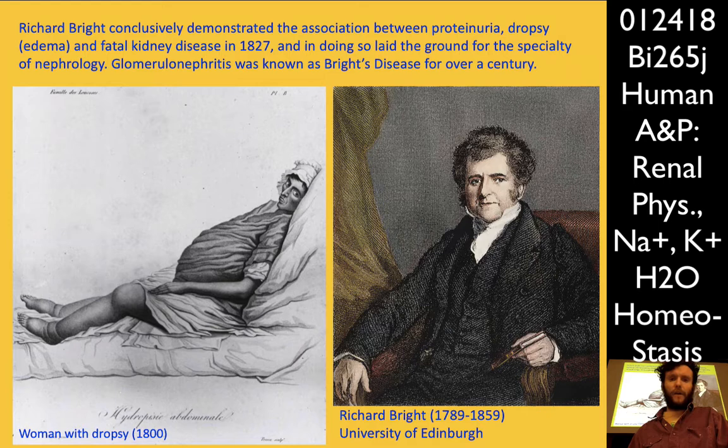By identifying that three-way connection between kidney failure, protein in the urine, and swelling, this was the beginning of modern nephrology. Glomerulonephritis, or inflammation of the glomerulus in your nephron, was known up until World War I as Bright's disease. This guy was Scottish and was at the University of Edinburgh.